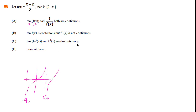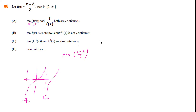So now we have tan of f(x). Who will tell me whether tan of f(x) is continuous or not? We will take up the options one by one: a, b, c, or d. Tan of f(x) is basically tan of (x minus 2) divided by 2.